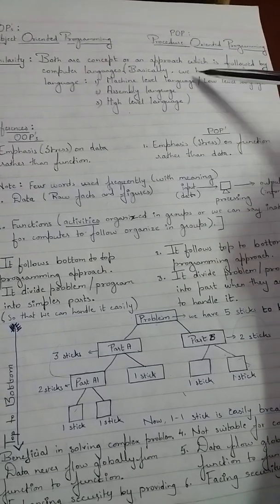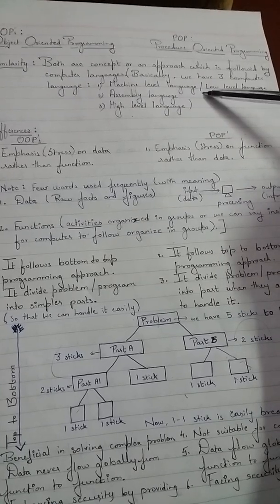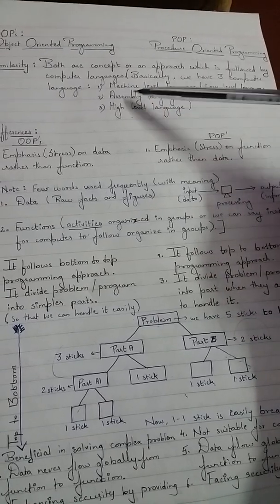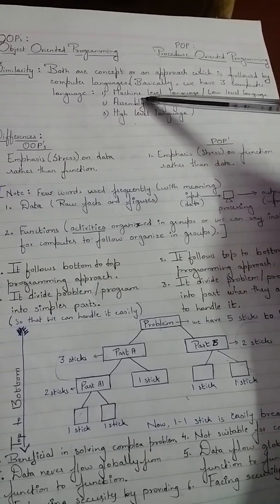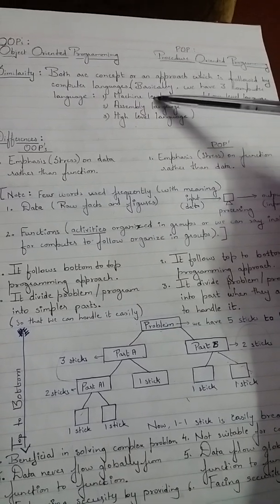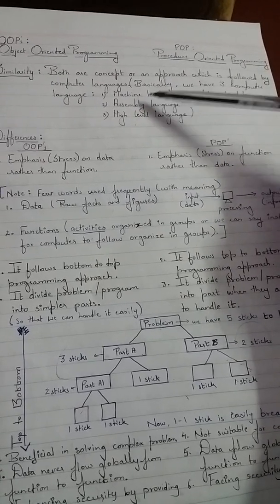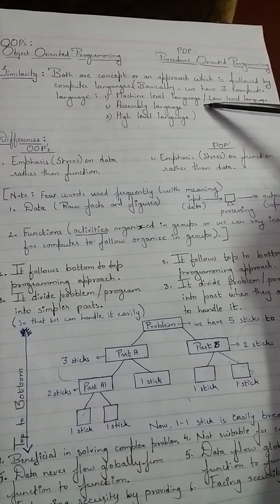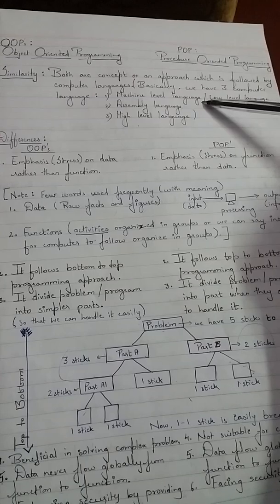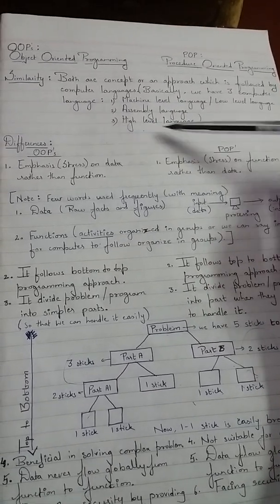Machine level language is a low-level language which contains only zeros and ones. The machine knows only current — either in a low form or in a high form. Zero indicates low and one indicates high. In this language everything is present in the form of zeros and ones, which makes it difficult to remember and understand. That is why we have another language — assembly language.